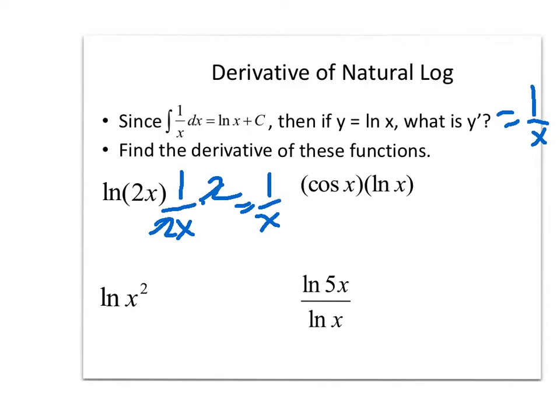So natural log of x squared, natural log is your outside function, x squared is your inside function, so the derivative would be 1 over x squared, times the derivative of that inside function, times 2x. In this case, the x's cancel, and I actually end up with 2 over x. So as you can see, you can make mistakes here if you don't do that process every time.